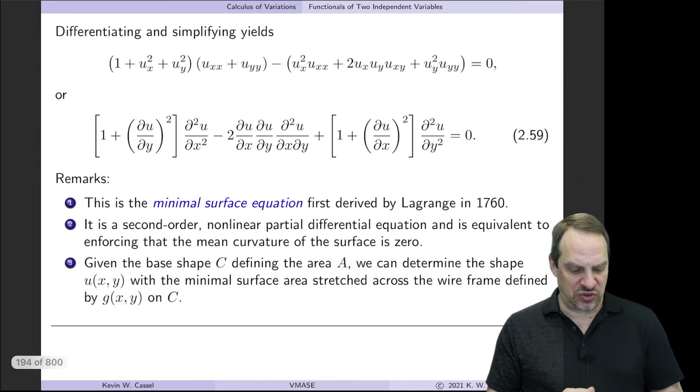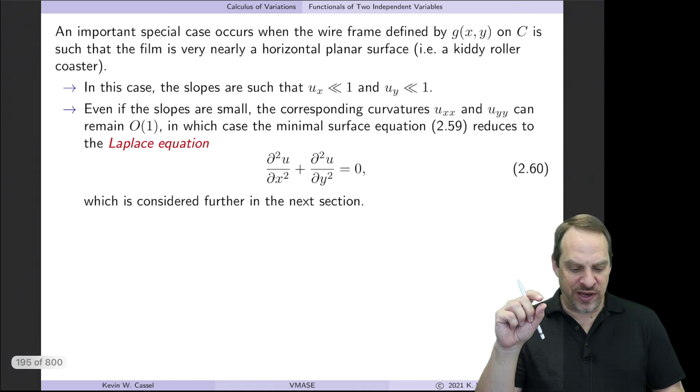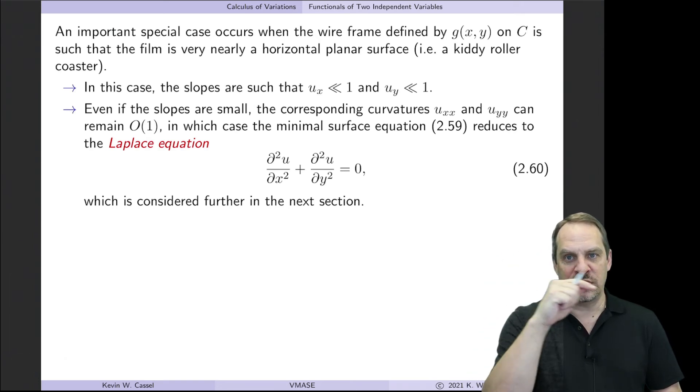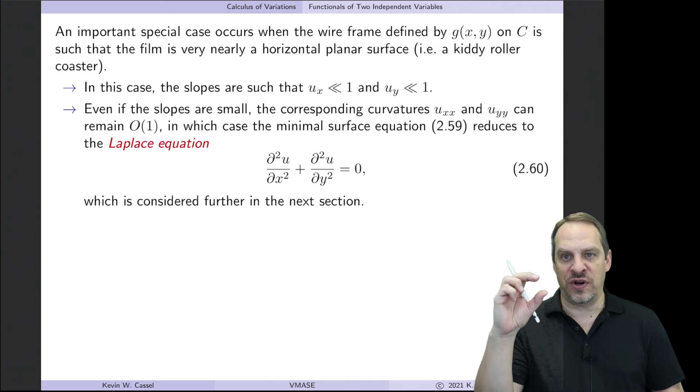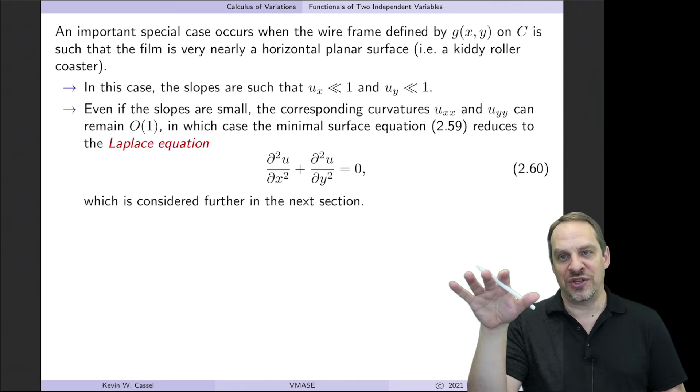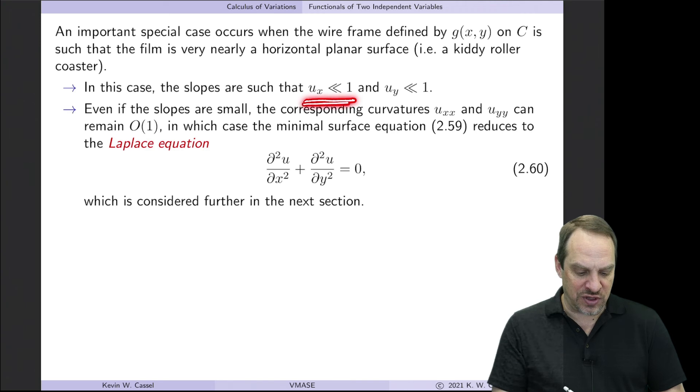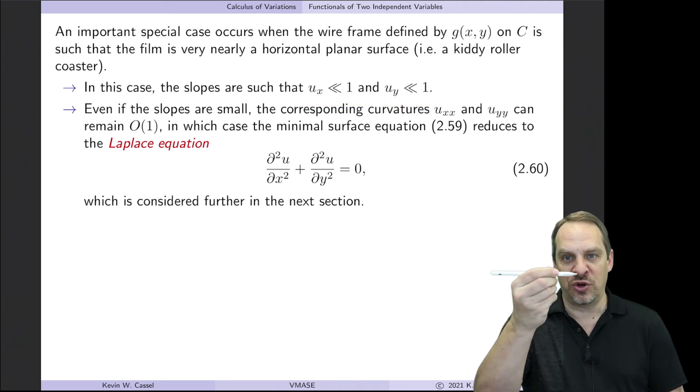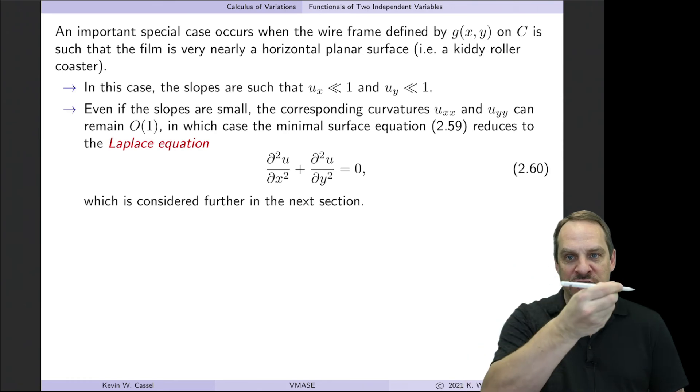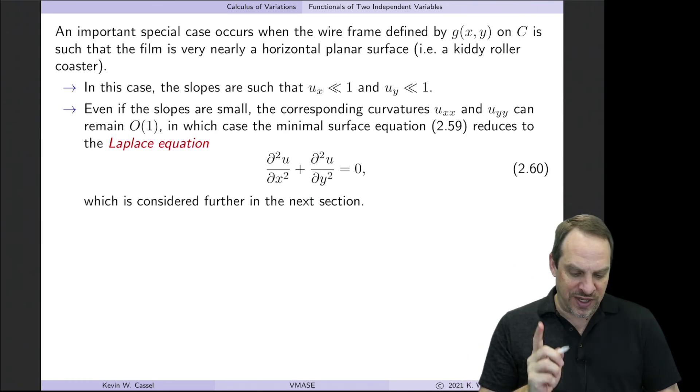Now let's look at a special case where the value of g, which is that height along the bounding curve c, let's say that that varies very little. So that you can think of this as like a kiddie roller coaster. So the ups and downs are very small in amplitude. So in that case, the derivatives of u with respect to x and y will be very, very small. So the slopes are small because it's just a kiddie roller coaster.